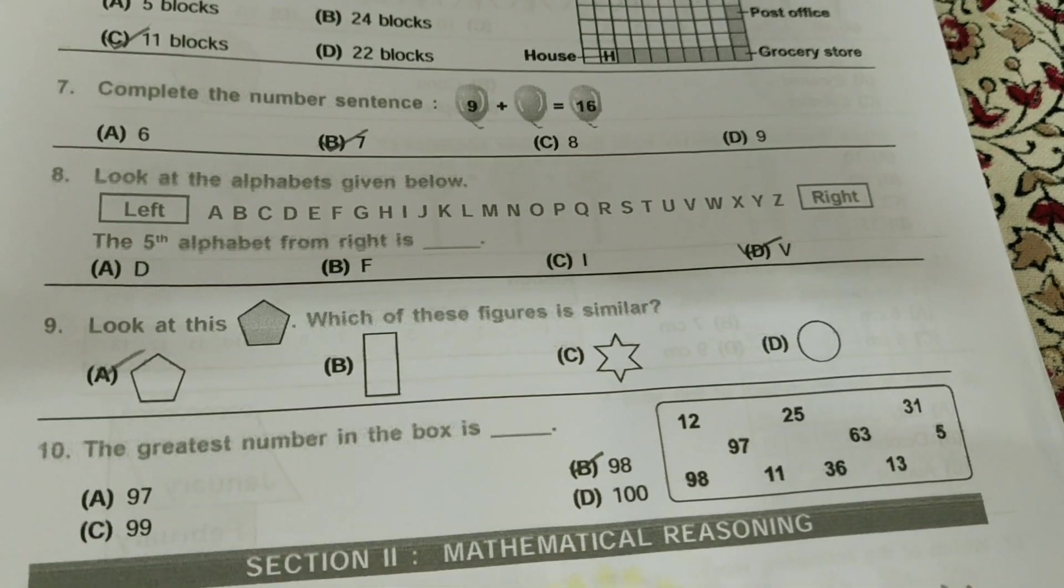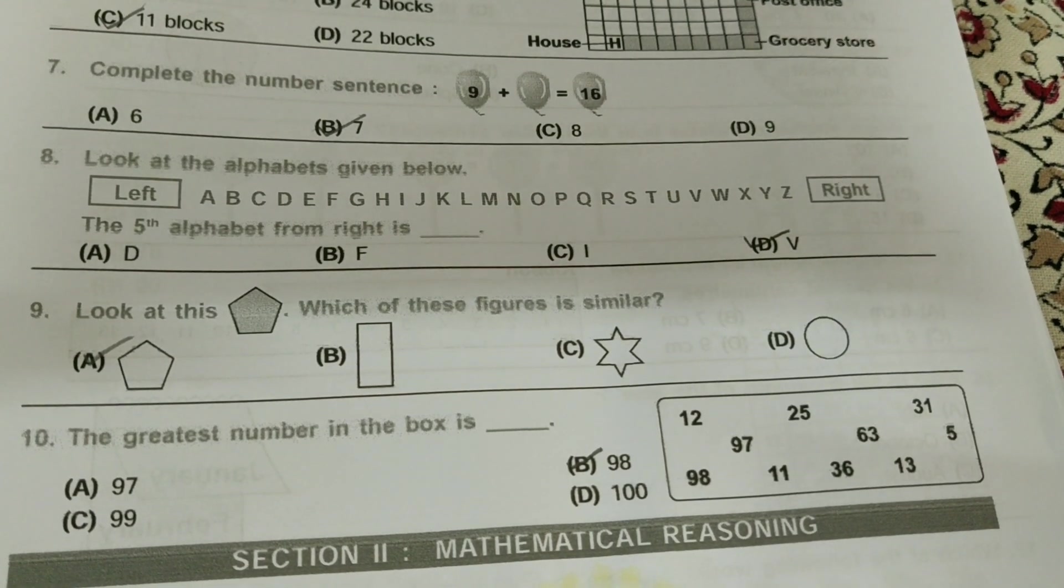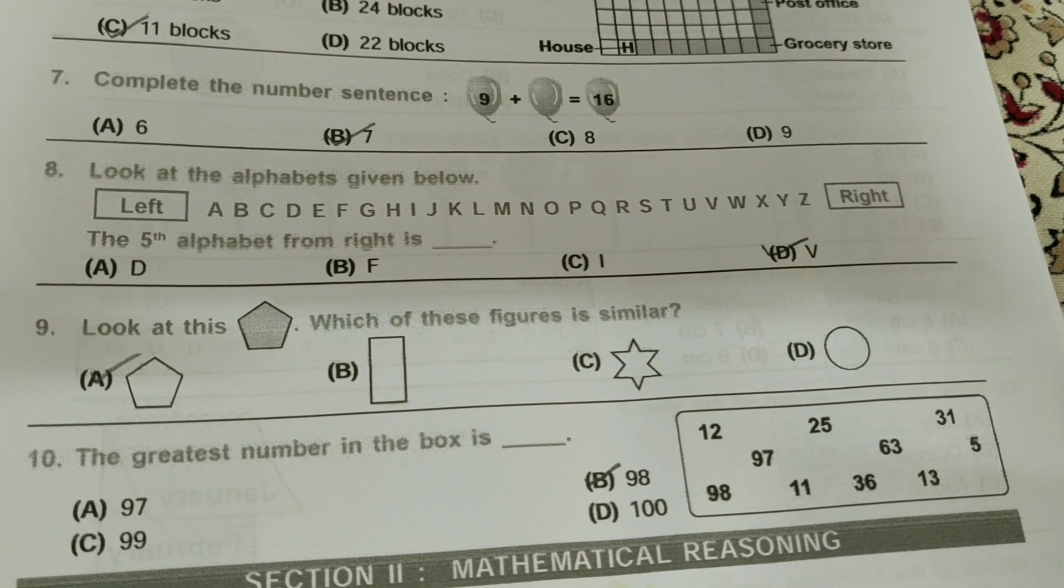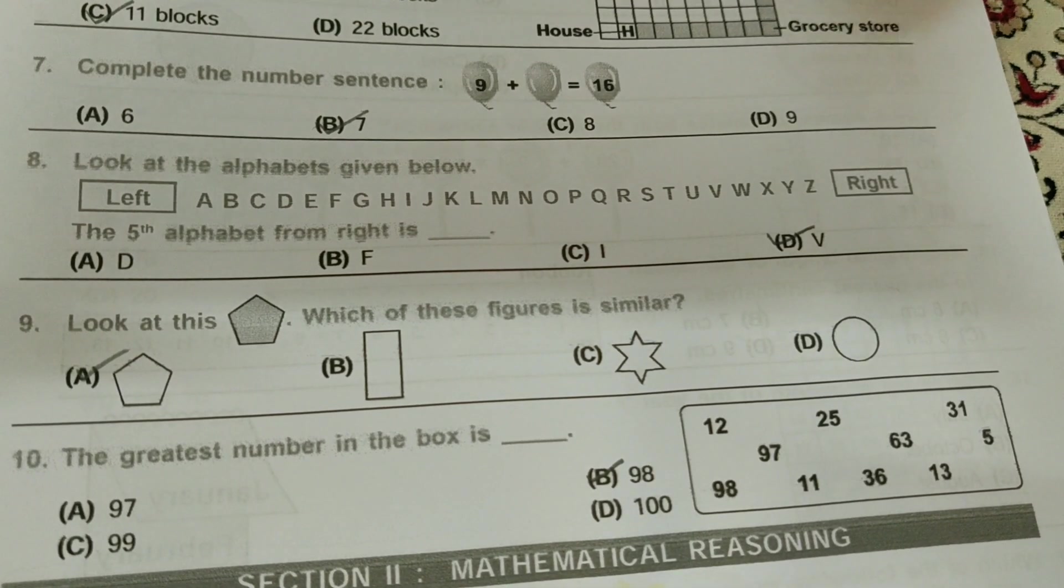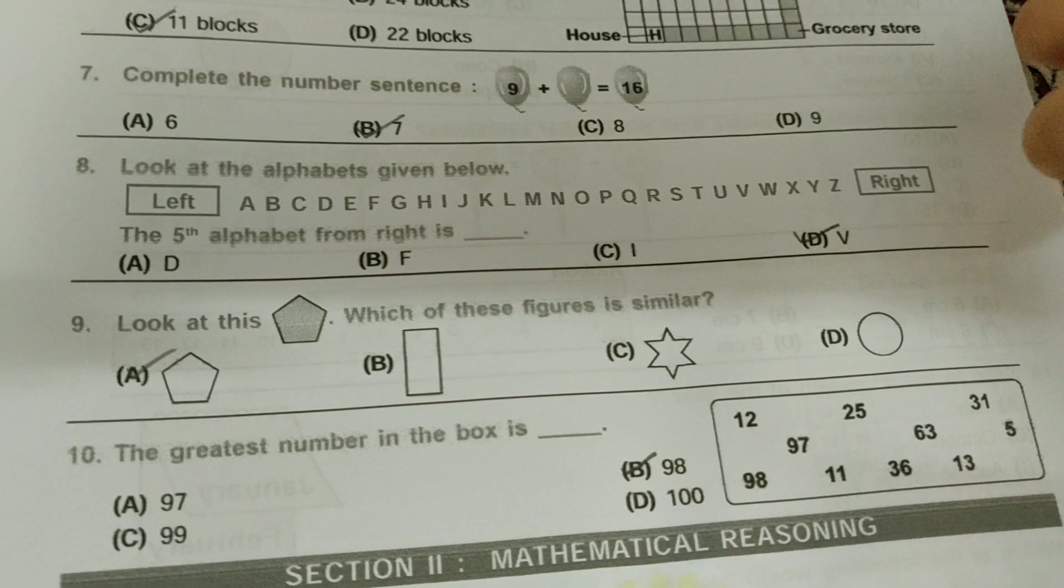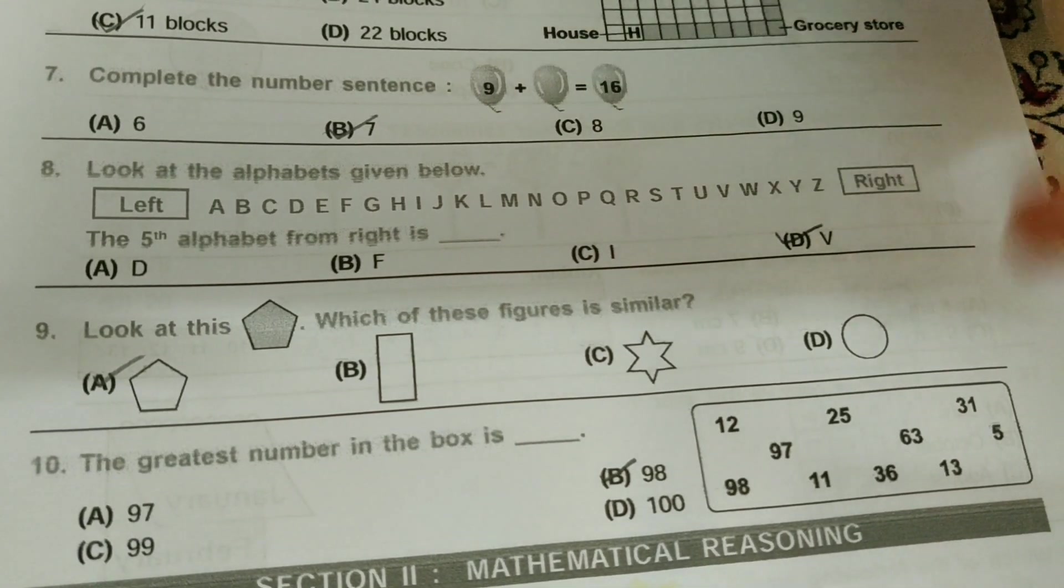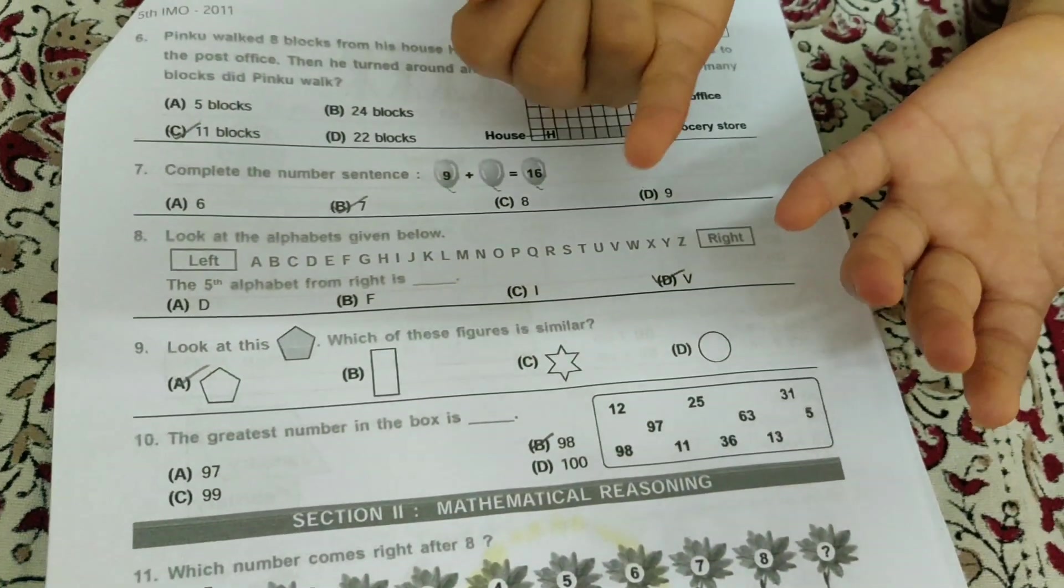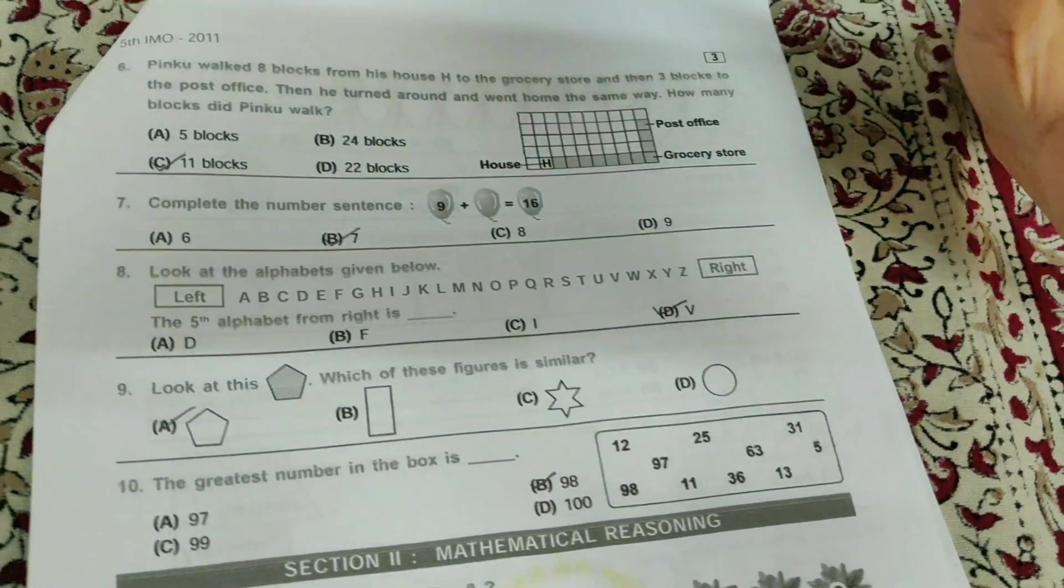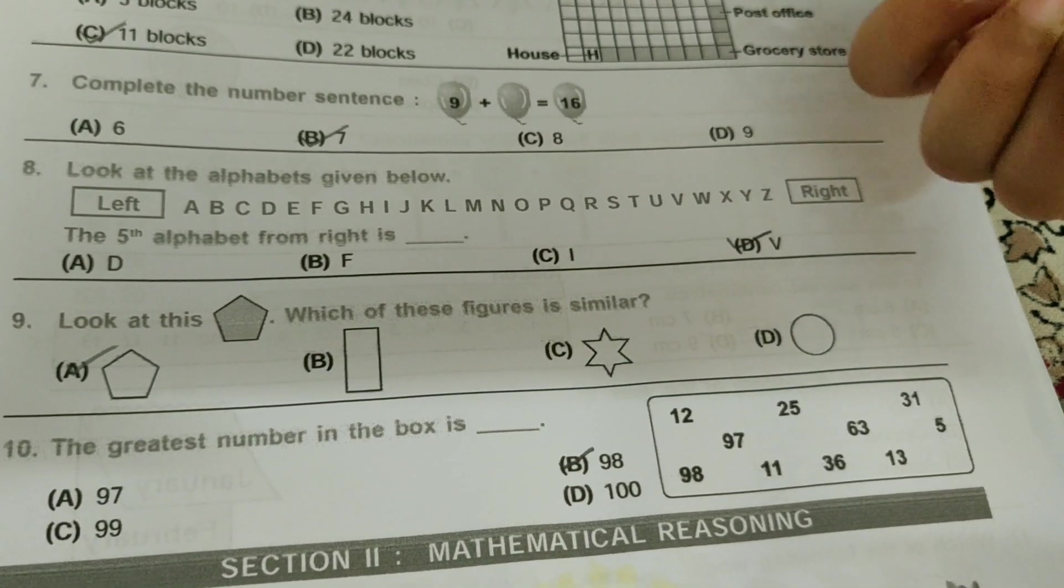Complete the number sentence. Nine plus dash equals sixteen. So you can just count on your fingers like this. Nine, ten, eleven, twelve, thirteen, fourteen, fifteen, sixteen. Seven, it's B bit. Or you can even just subtract it if you know subtraction, like sixteen minus nine.